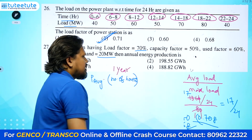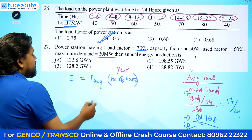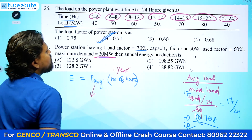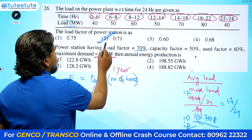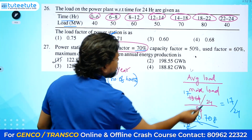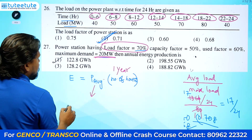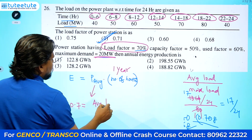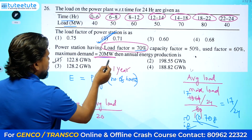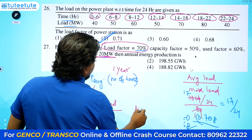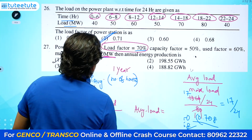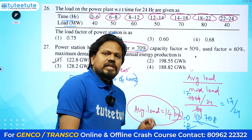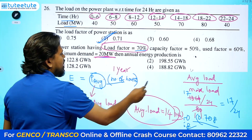Energy equals average power multiplied by number of hours. For one year, how many hours are there — that many hours you multiply. Average load: load factor = 70% = 0.7 = average load ÷ maximum load. Maximum load is 20 MW. So average load = 20 × 0.7 = 14 MW.